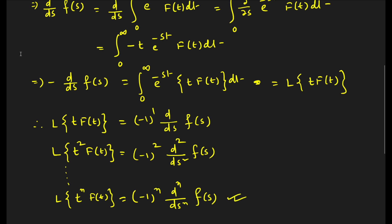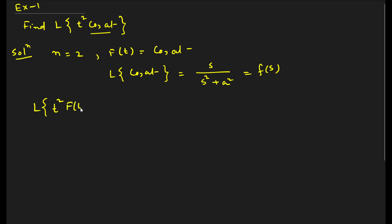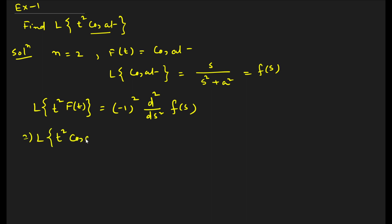Using this result we will do some problems. Here we have t² cos(at), so n equals 2 and f(t) = cos(at). First, we know that L{cos(at)} = s / (s² + a²); let this be F(s). Now for this problem, since n = 2, according to the theorem: L{t² cos(at)} = (-1)^2 · d²/ds² F(s) = d²/ds² of [s / (s² + a²)].